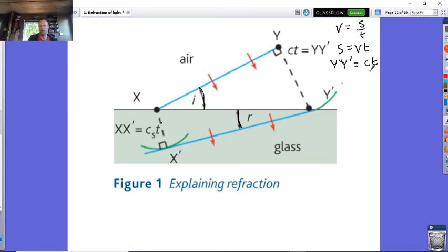Conversely, when it goes into the glass block you now have X to X', which is over here. In your book they've called that cst, which is the speed multiplied by your distance. It's cs because that's the speed of light in that substance.